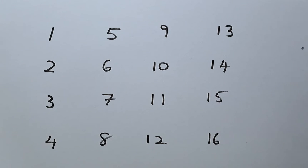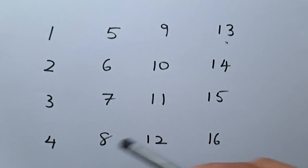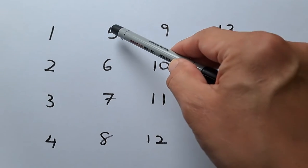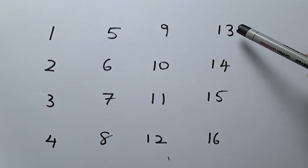You can see on the paper in front of me, there are numbers from 1 to 16. 1 to 4 in the first column, 5 to 8 in the second column, 9 to 12 in the third column, and 13 to 16 in the fourth column.